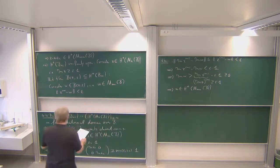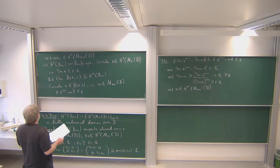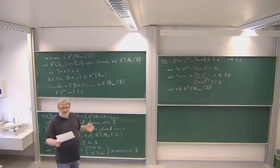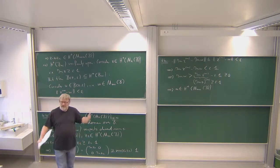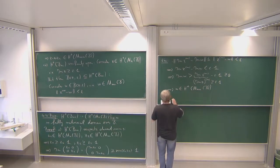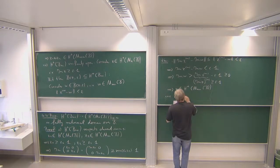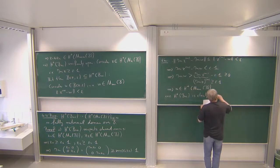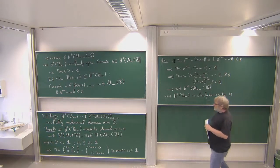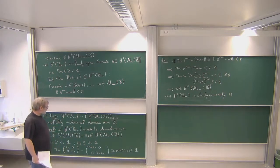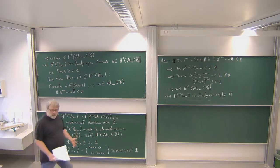So this means this domain is uniformly open. The third property is it should be non-empty, but of course this is clear — for example, i times the identity is in the upper half-plane. So H+_NC(B) is non-empty. This tells us this set is a good domain — a fully matricial domain — and on this we can define our Cauchy transform.